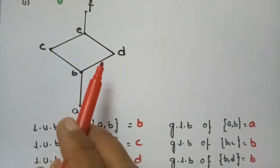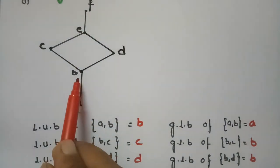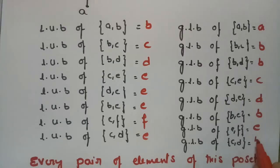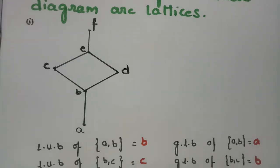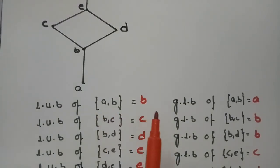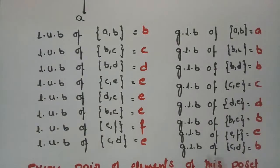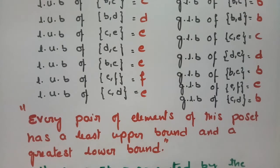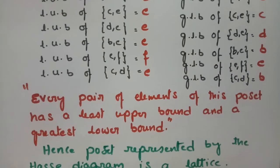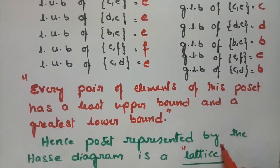Coming to (c, d): the upper bound is e and the lower bound is b. I have shown for each and every pair of elements the least upper bound and the greatest lower bound — that is, the infimum and supremum exist for each and every pair of this poset. Hence this poset represented by the Hasse diagram is a lattice.